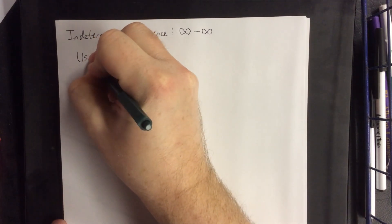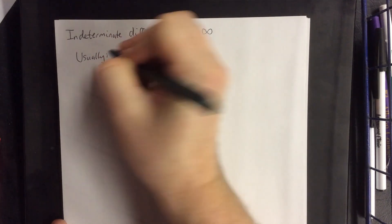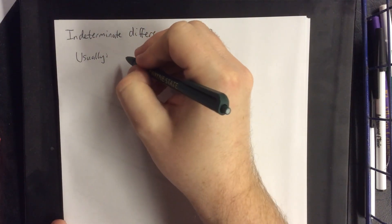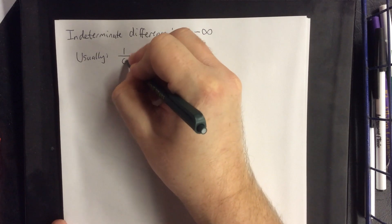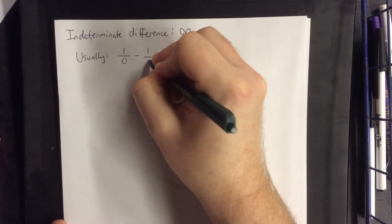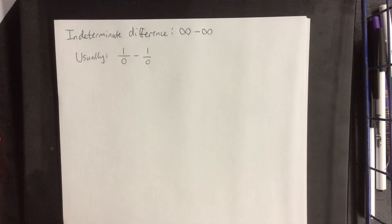This usually tends to happen when you wind up with a couple of fractions that are being either added or subtracted, and it usually happens because you have 1 over 0 minus 1 over 0, or something along those lines.